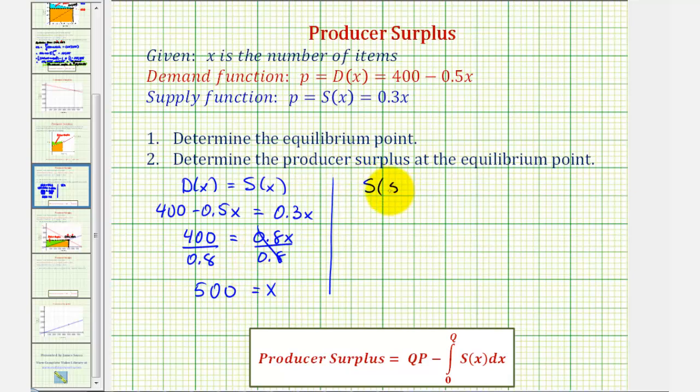S of 500 would be equal to 0.3 times 500 or 150. So the equilibrium point is 500 comma 150, where again 500 is the equilibrium quantity and 150 is the equilibrium price.